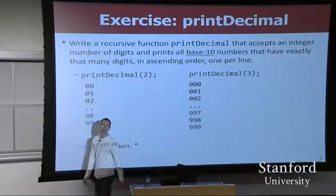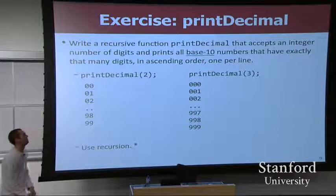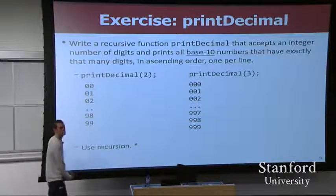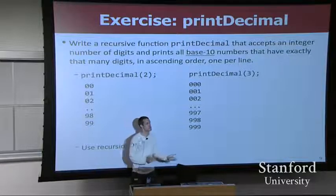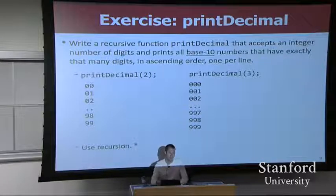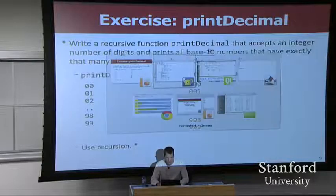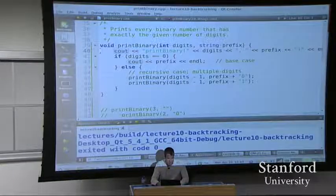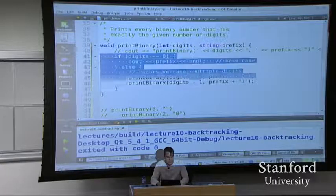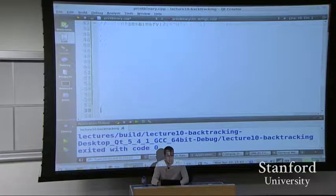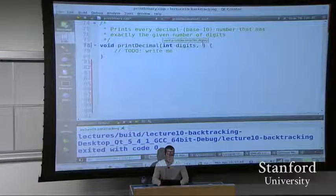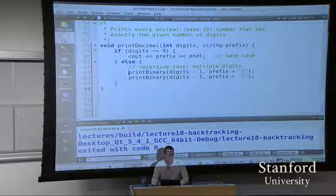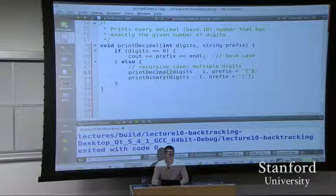What if we were printing all base 10 numbers with that many digits instead of base 2? The code is probably pretty similar. I'll copy and paste from print binary and create a print decimal function with a string prefix parameter, then change binary to decimal. What do I need to change so it will really be decimal?